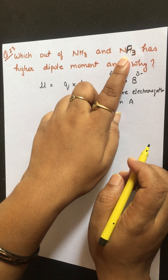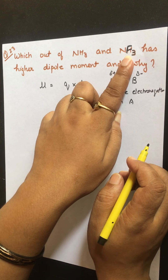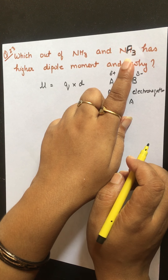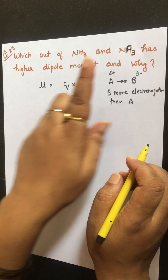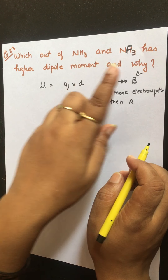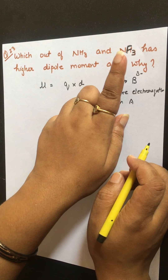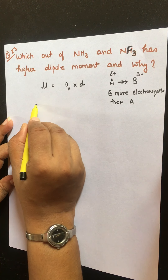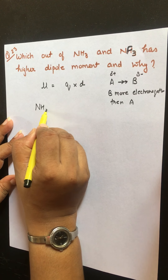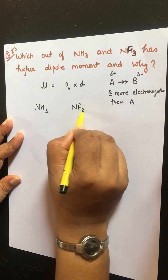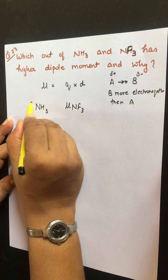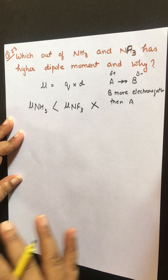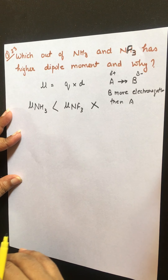The more the charge separation, the more will be the dipole moment. Taking this into consideration, NF₃ must have a higher dipole moment compared to NH₃, because fluorine is more electronegative than hydrogen, giving more charge separation. So according to this concept, NF₃'s dipole moment must be higher — but this is not the actual case.